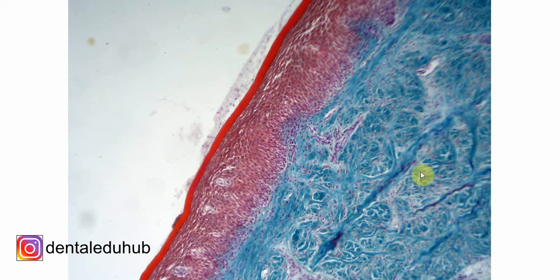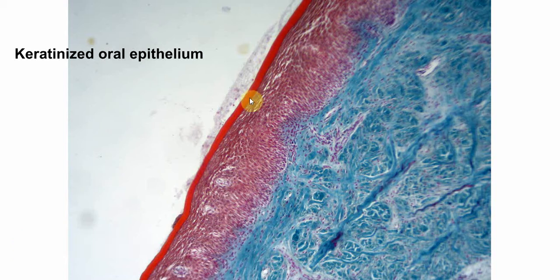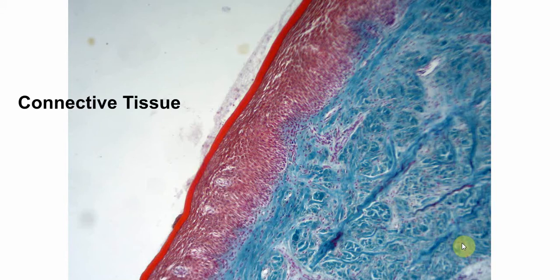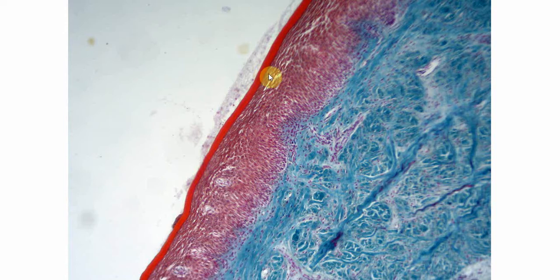This is keratinized oral epithelium. This is the epithelium and this part is the connective tissue part. This is a low magnification image and this is not an H&E staining — it is some other staining. But this is a keratinized epithelium and this part is the connective tissue part.